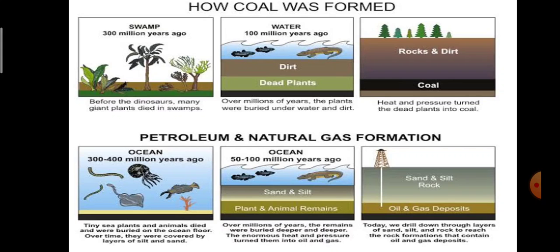Over millions of years the remains were buried deeper and deeper, and the heat and pressure transformed them into oil and gas. In coal formation, dead bodies of land plants and animals are used, while in petroleum formation, bodies of tiny sea plants and animals are used. Similarly, sand and silt layers form over the remains, and high pressure and temperature from these layers change them into oil and gas deposits.